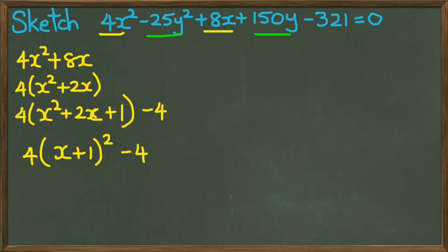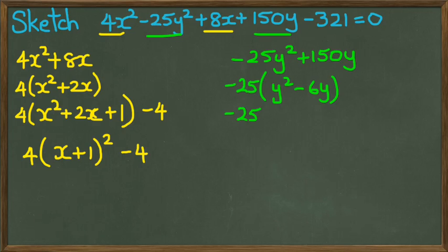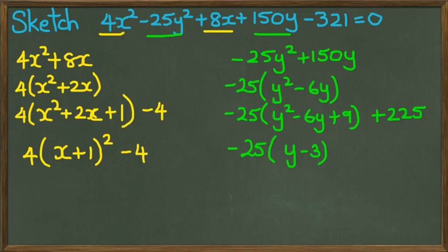Okay, now I'll have a look at the y's. I've got negative 25y squared plus 150y. Take the common factor of negative 25 out. Then I'll complete the square where I should get y squared minus 6y plus 9. And I've got to add 225 to compensate for the negative 25 times positive 9. And of course, this could be simplified as negative 25 bracket y minus 3 squared plus 225.